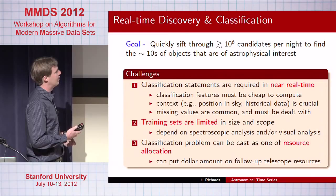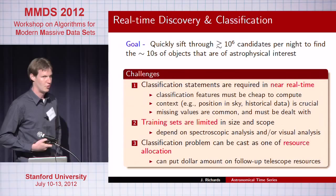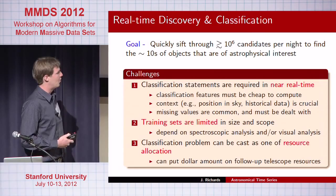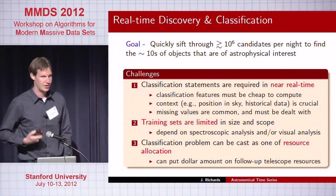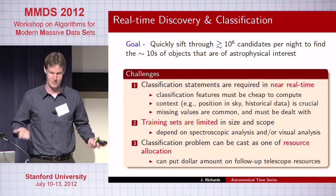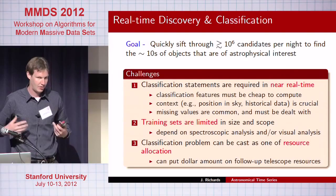We're really limited by both the size and scope of our training sets. What drives all of this is resource allocation — since we can put dollar amounts on follow-up observation time on one of the biggest optical telescopes in the world, we can phrase our classification performance in terms of telescope resources.